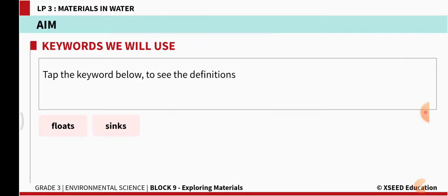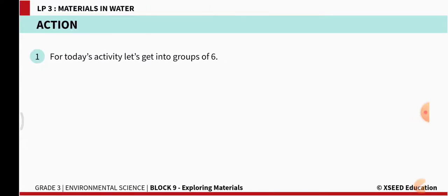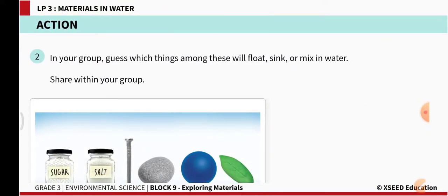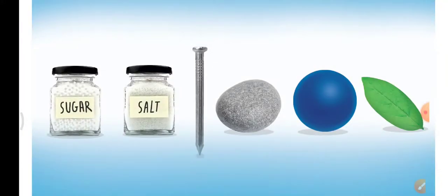The keywords we are going to learn are: 'floats' — which means rests on the surface of a liquid — and 'sinks' — which means falls slowly to a lower level in a liquid. Now, looking at the pictures in the chart, you should guess whether these materials float, sink, or mix in water.